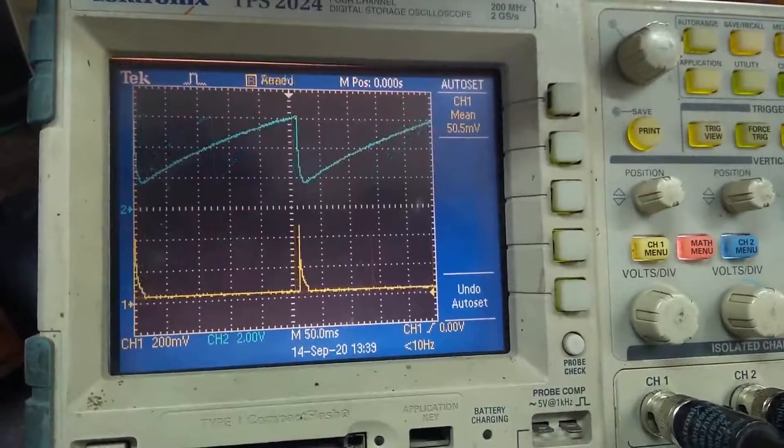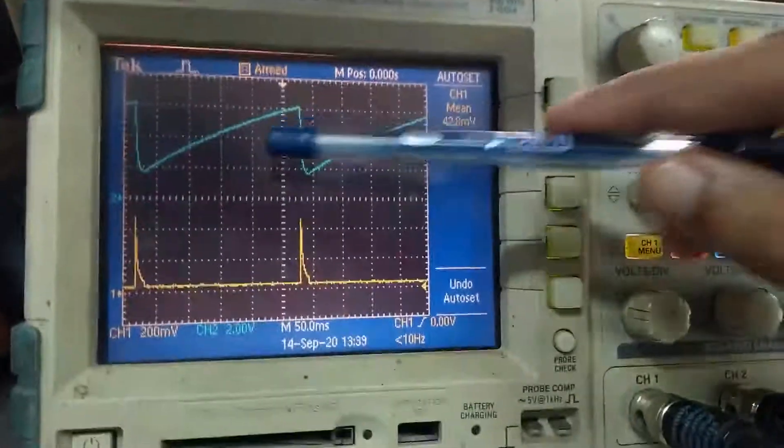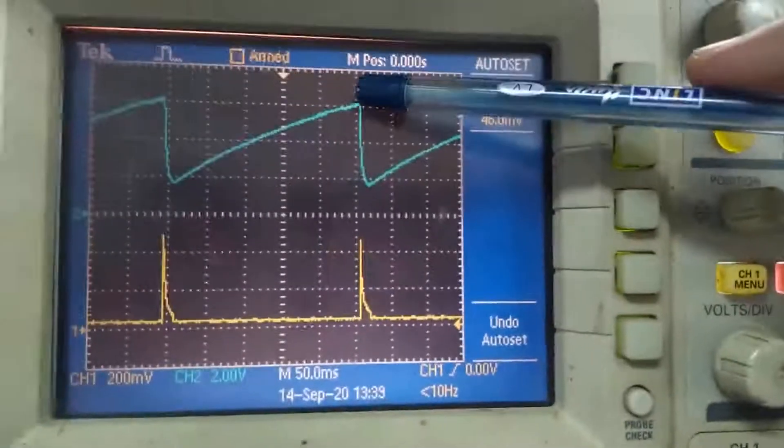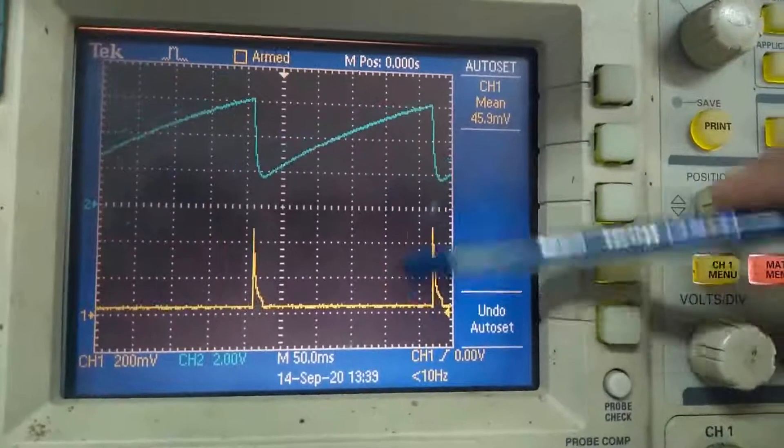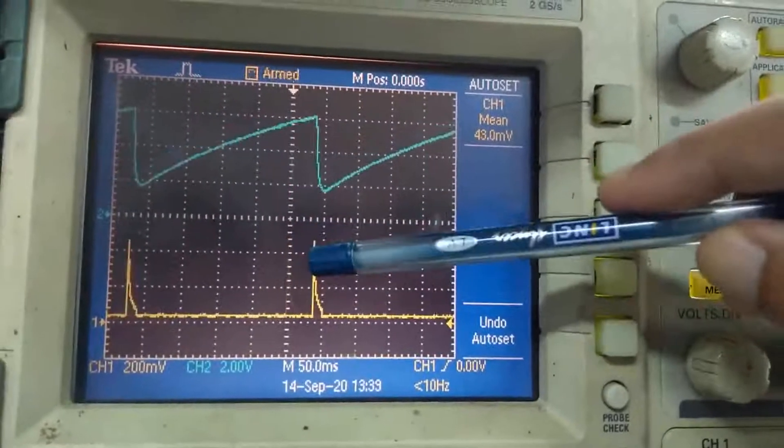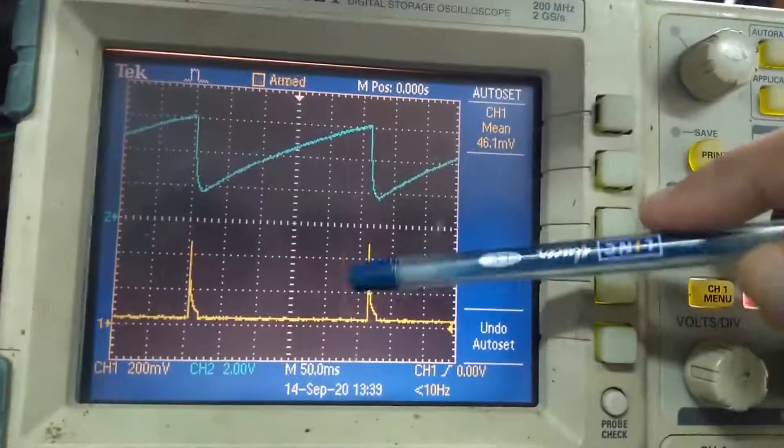I can also scale zoom it and we can see that this is the charging part of your capacitor voltage and discharging. And during the discharging we are getting the pulses which is going to be utilized for the triggering of the SCR.